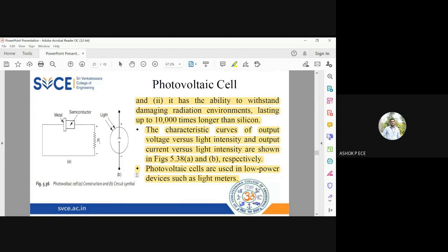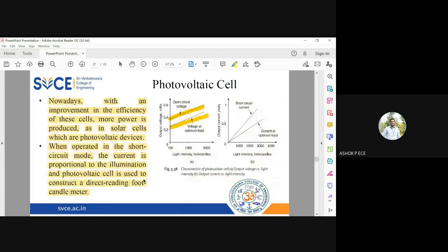If you take voltage directly from the device, it's called open-circuit voltage. If you connect a resistor and measure voltage across it, it's called voltage at load, which will be less than open-circuit voltage due to losses from current flow. Similarly, short-circuit current and current at optimum load are measured. These graphs always increase with the increase in the amount of light falling on the photovoltaic cell.